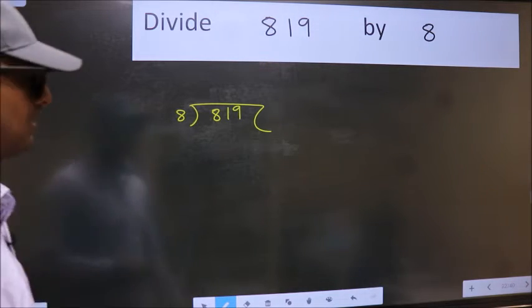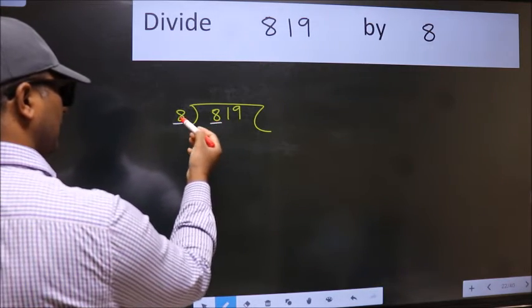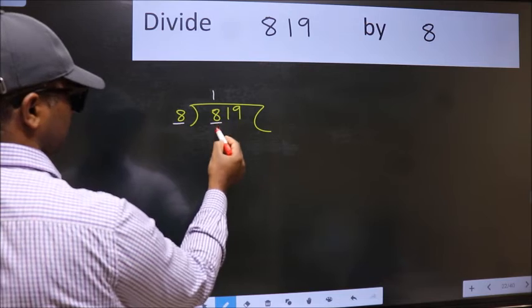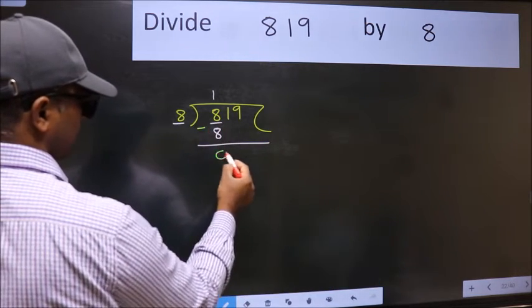Next. Here we have 8 and here 8. When do we get 8 in 8 table? 8 once, 8. Now we should subtract. We get 0.